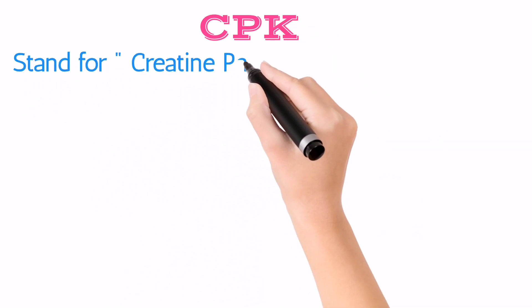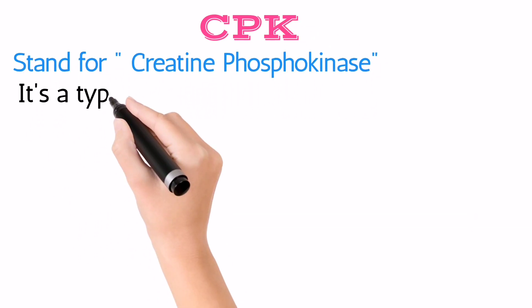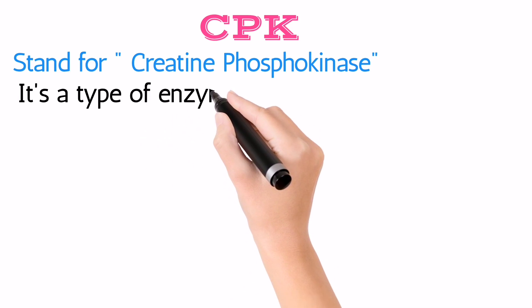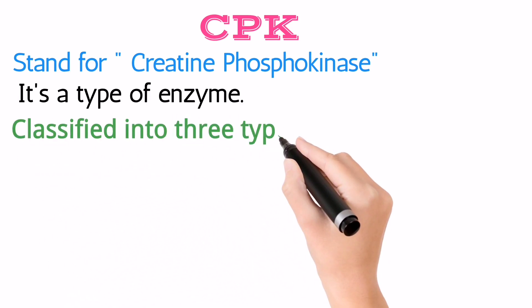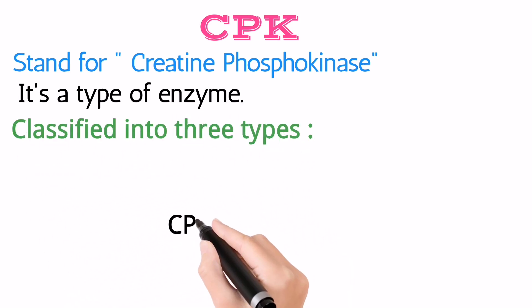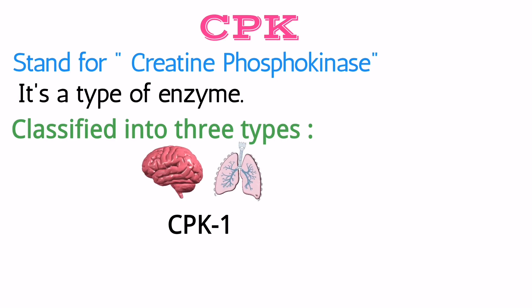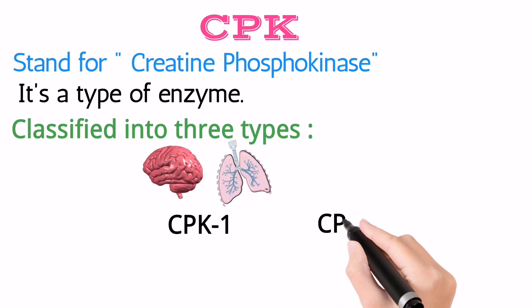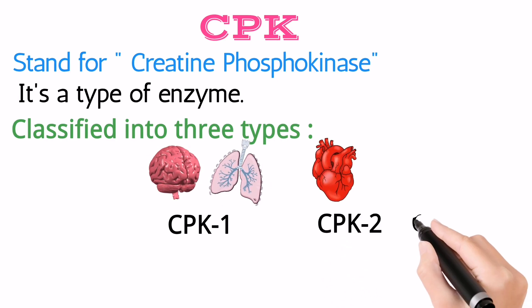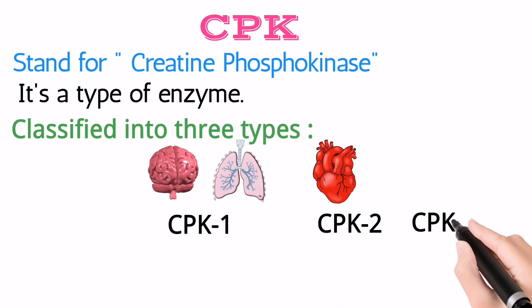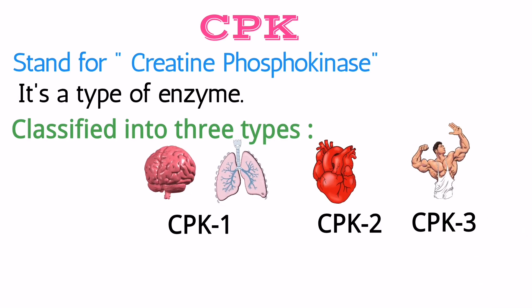CPK stands for Creatine Phosphokinase. It is an enzyme which is classified into three types: CPK1, that is present in the brain or lung; CPK2, which is found in the heart; and CPK3, that is present in skeletal muscles.